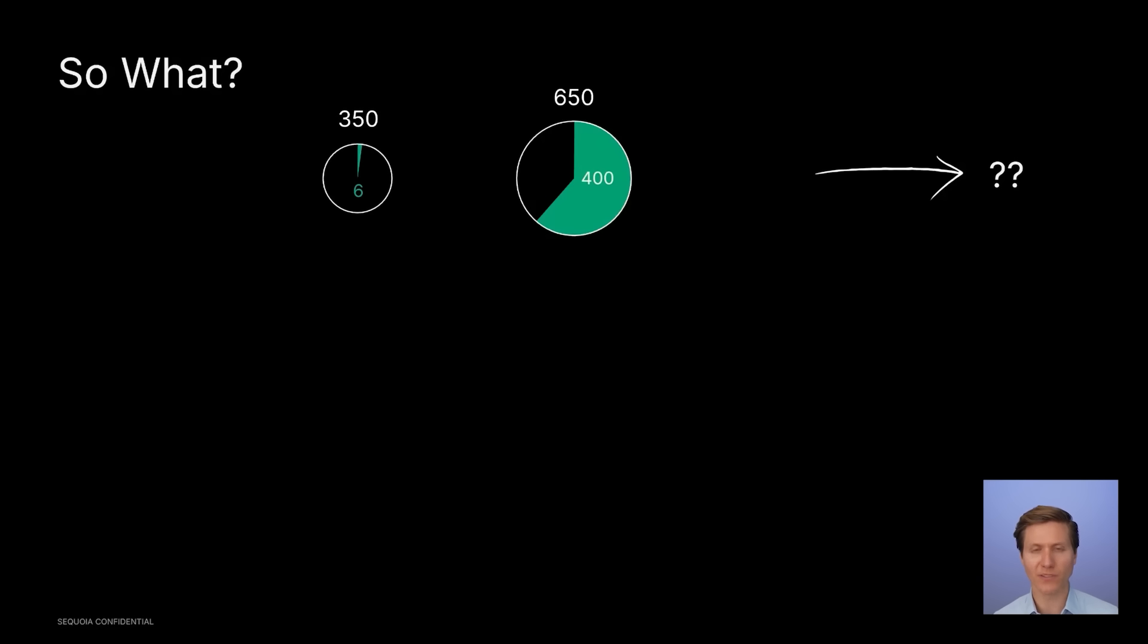Now, we're not called Sequoia History, we're called Sequoia Capital. So let's talk about the dollars and cents. You may have seen this slide before. We used it in our AI Ascent conference. On the left is a $350 billion circle representing the spend on software at the beginning of the cloud transformation. That sixth sliver is $6 billion of software-as-a-service spend. Now, what happened is not only did software-as-a-service increase its share of the on-prem software market, it actually expanded the entire market, growing to over $650 billion today. We believe something similar is going to happen in artificial intelligence and in an even bigger opportunity.